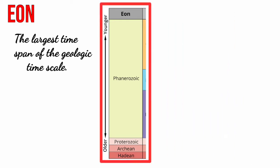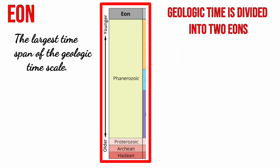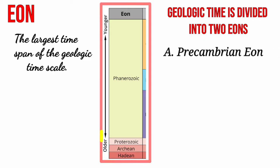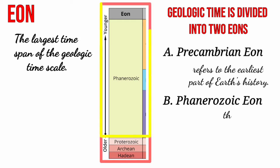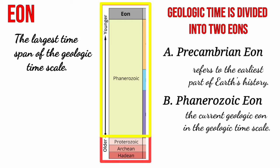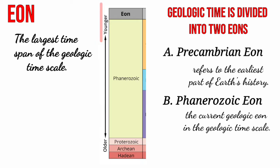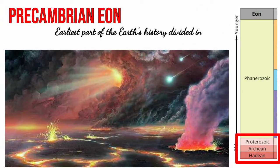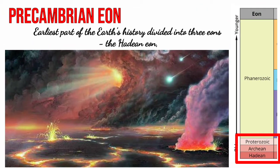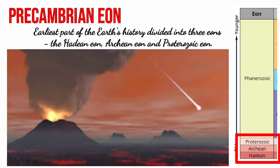The geologic timescale is divided into two eons. We have the Precambrian eon, which refers to the earliest part of Earth's history, and the Phanerozoic eon, which is the current geologic eon. The Precambrian eon is divided into three eons: the Hadean eon, the Archean eon, and the Proterozoic eon.